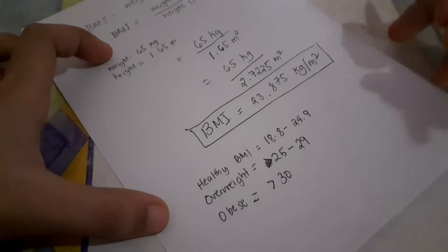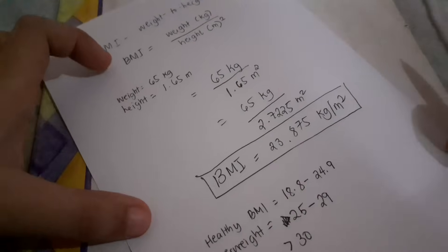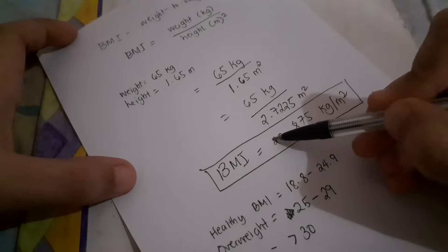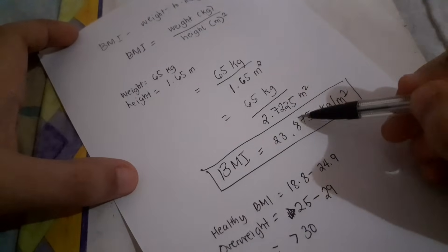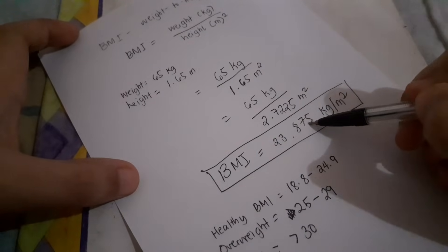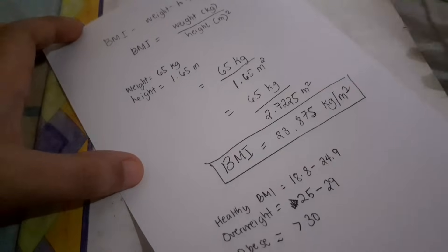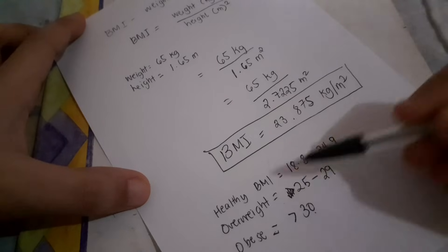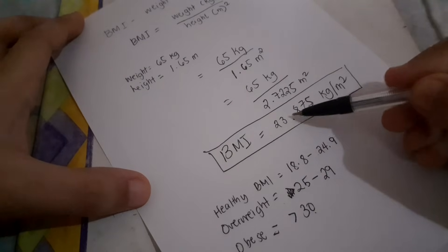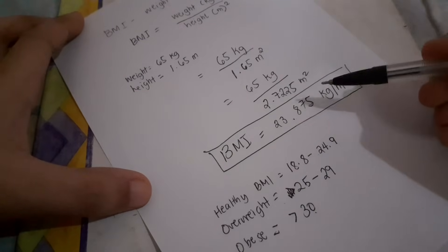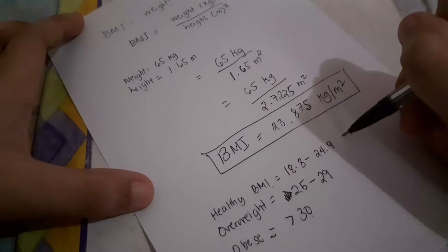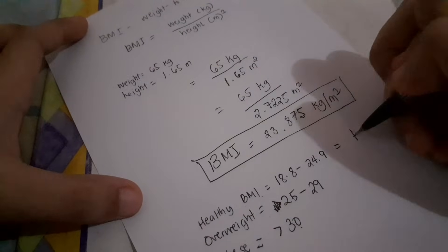So let's look at the BMI nung ating kinompute kanina. So ang BMI niya ay 23.875. So tingnan natin kung saan ito nagfa-fall. Dito ba sa obese, overweight, sa normal. Kasi itong 23.875 ay nagfa-fall sa range ng healthy BMI. So I can say na itong person na ito ay healthy.